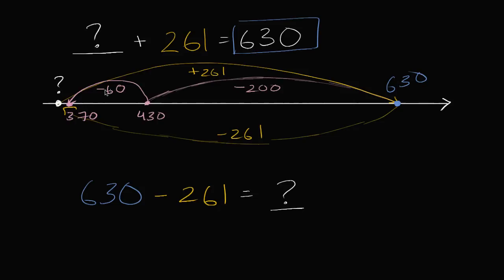And then we gotta subtract one more. We have to subtract 260, and then we subtract one. So 370 minus one is 369. So this right over here is 369.